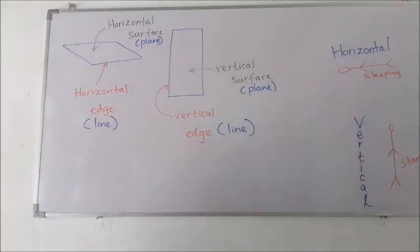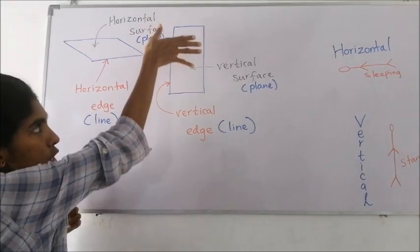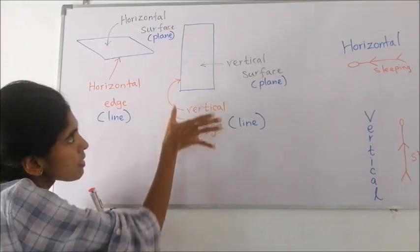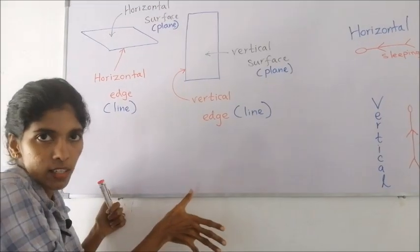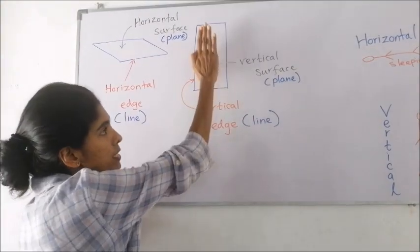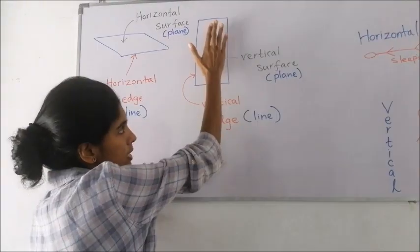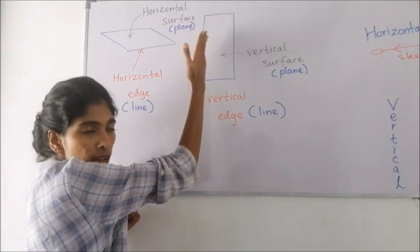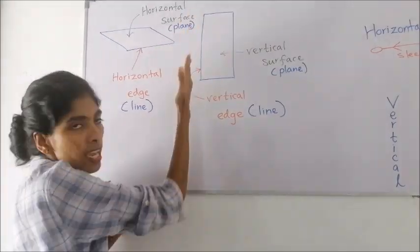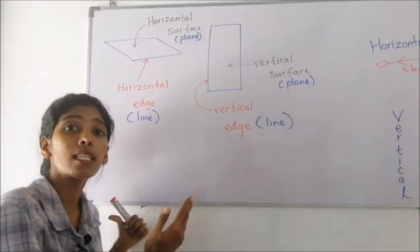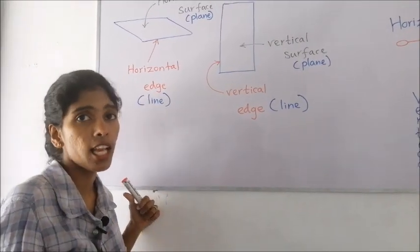Now look at this example — it is like a door. This door's surface is like standing, so we call such surfaces vertical surfaces, also called a vertical plane. And this edge is also standing, so it can be named as a vertical edge or vertical line. Remember: horizontals are sleeping ones, verticals are standing ones.